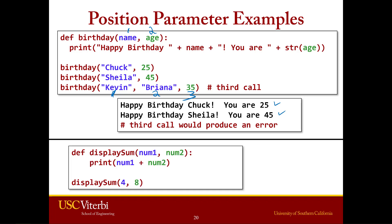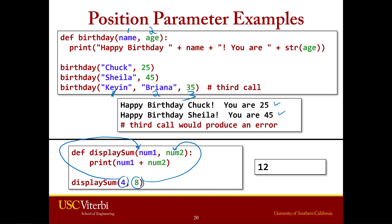Another example with multiple parameters: display_sum(4, 8). The 4 goes to the first parameter and the 8 goes to the second parameter. Our function is simply going to add those two, and we get 12.